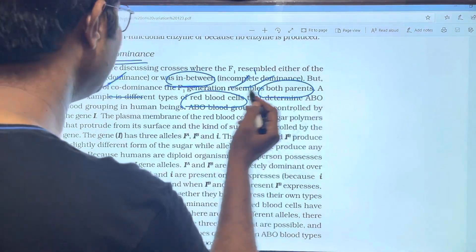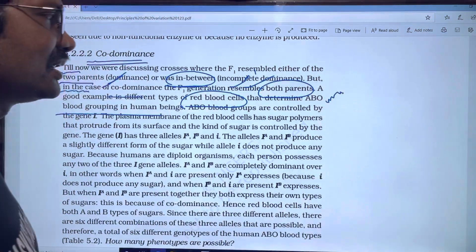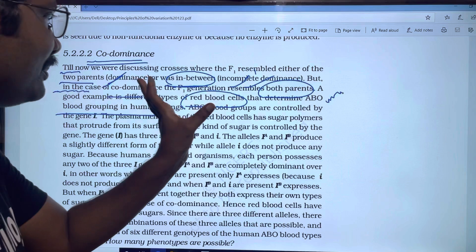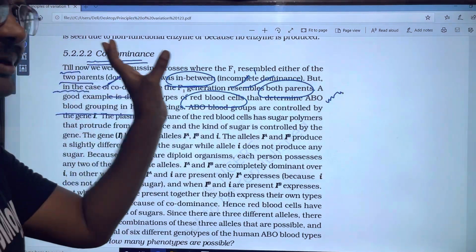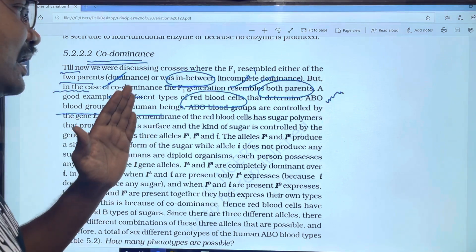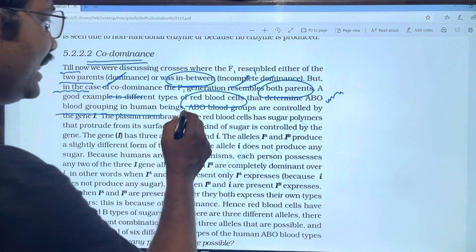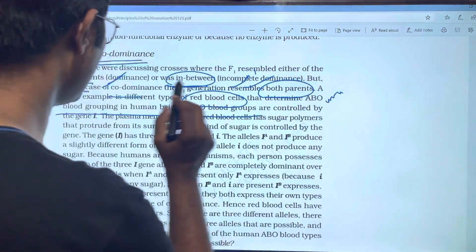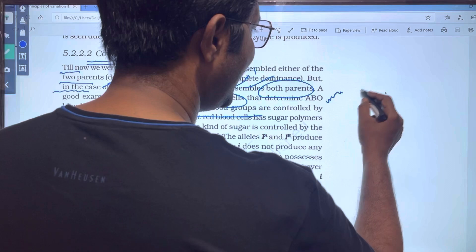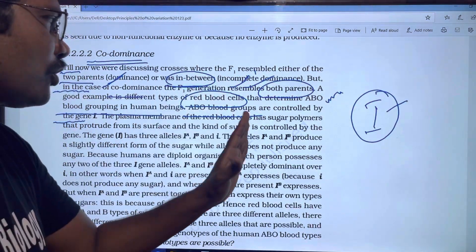Co-dominance - ABO blood groups is the best example. ABO blood groups are controlled by gene I.